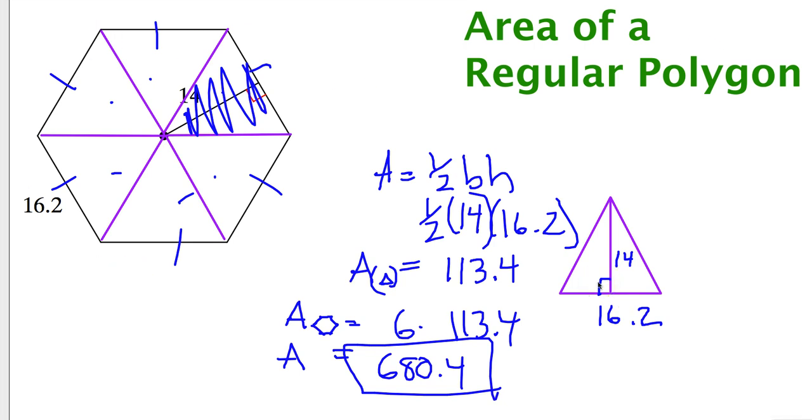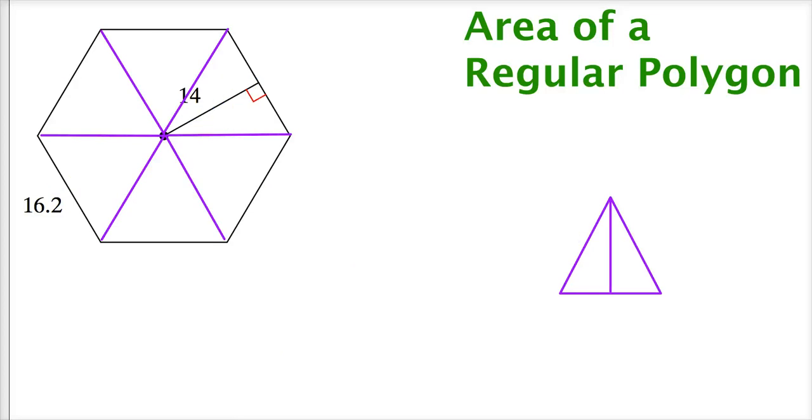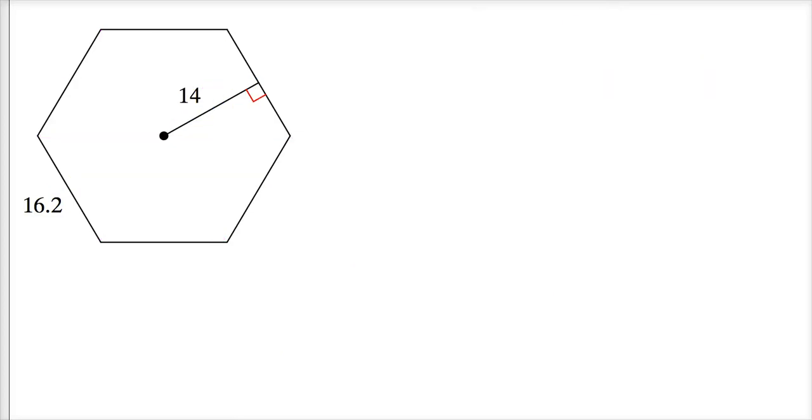Now, that's all fine and dandy, but who wants to do that every time? Nobody. So there's a formula out there. Area of a regular polygon is 1 half times apothem times perimeter.